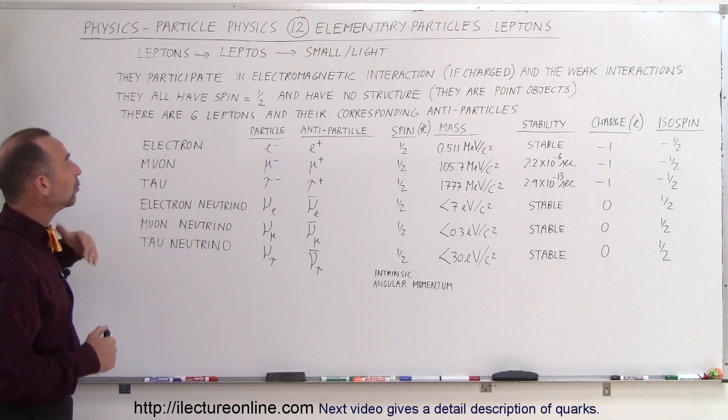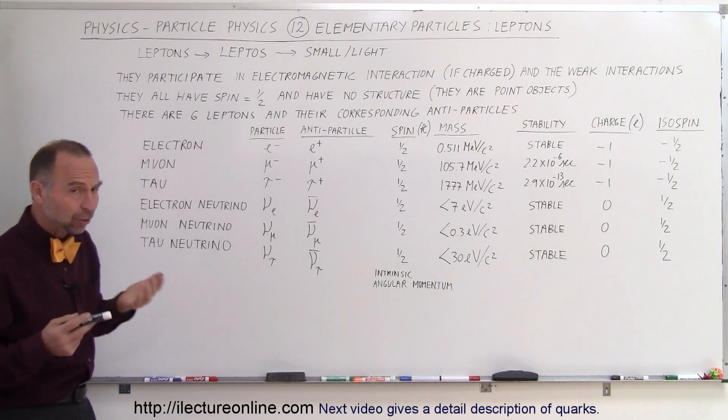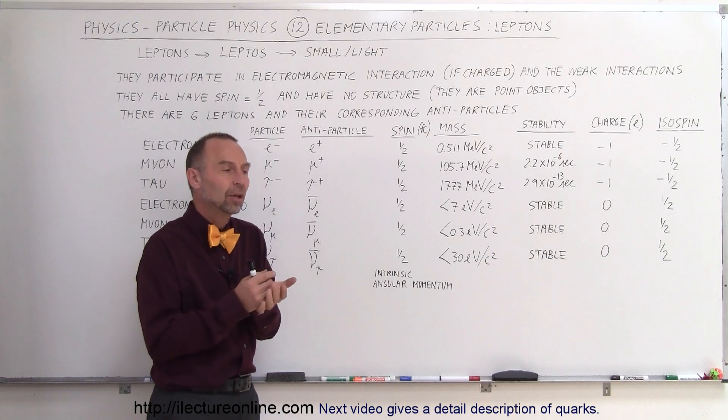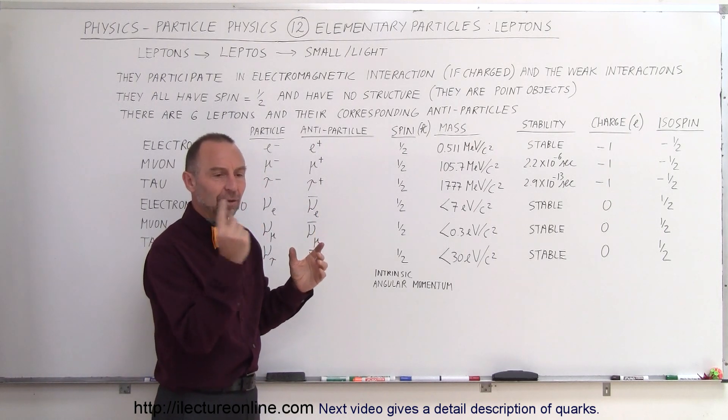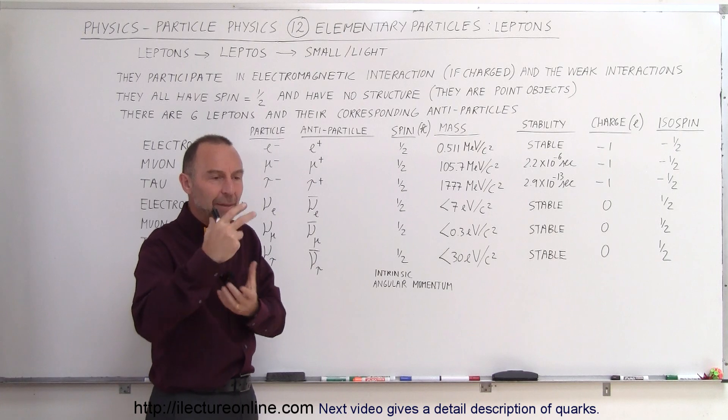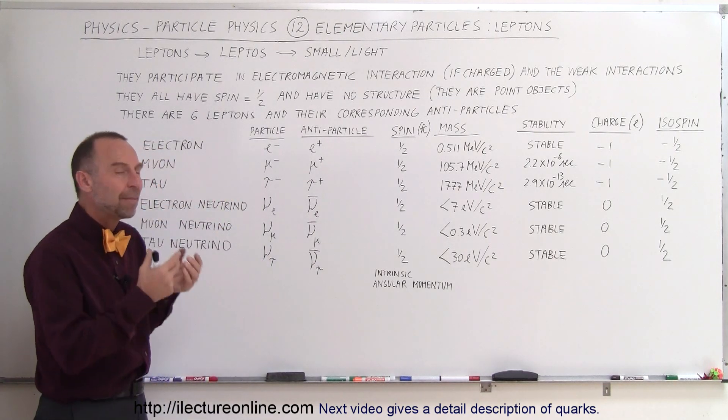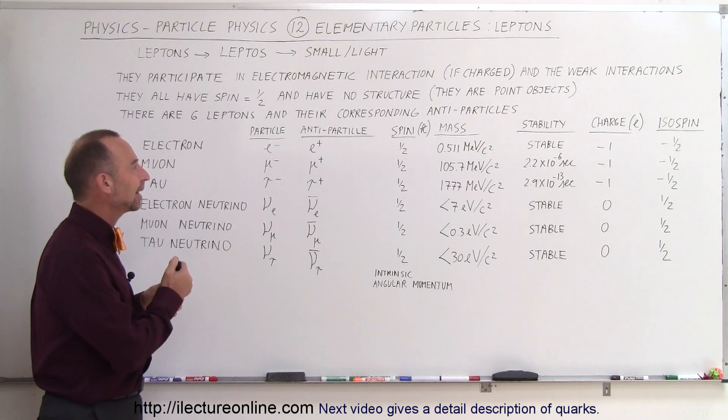So they all have spin one half. And when we talk about the spin, there's an intrinsic angular momentum spin. Just like in the macro world, objects that are rotating, they have angular momentum. And so there is a likewise angular momentum existing in the electrons.